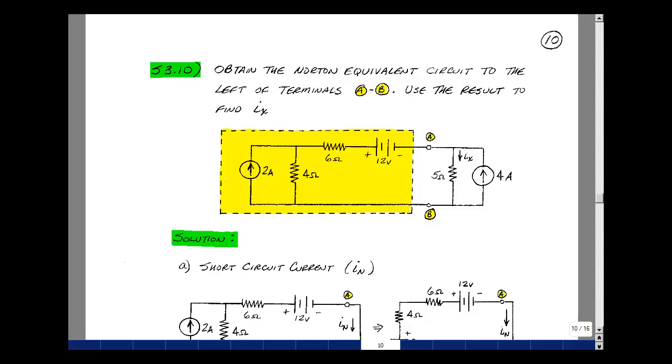If you recall, the Norton equivalent circuit is a two-step process. First, remove the load and then find the current in the short circuit from terminals A to B, and then look back into those terminals with all the independent sources set equal to zero. That would be these two, and find the equivalent resistance.